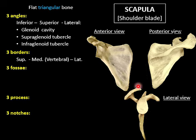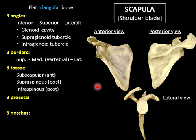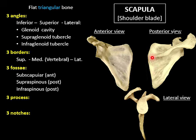The three borders are the superior border, the medial border called the vertebral border because it is close to the vertebrae, and the lateral border. The three fossae include the subscapular fossa on the anterior surface, from which the subscapularis muscle arises. On the posterior surface there are two fossae separated by a process called the spine: the supraspinous fossa, giving origin to supraspinatus muscle, and the infraspinous fossa, giving origin to infraspinatus muscle.